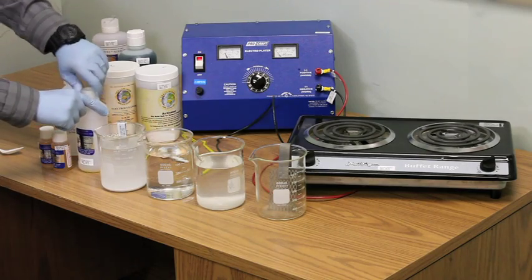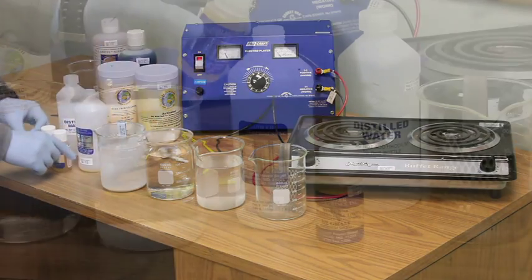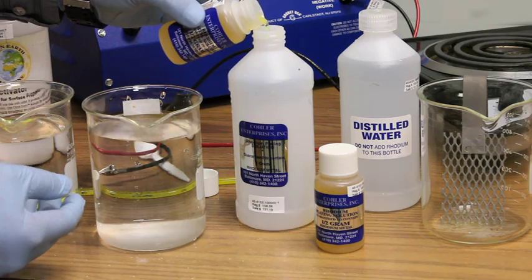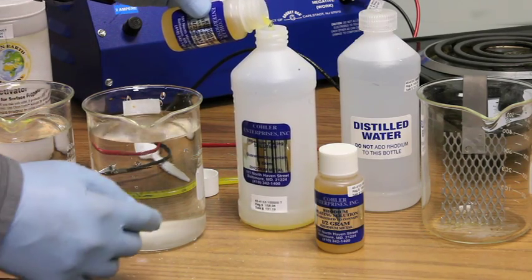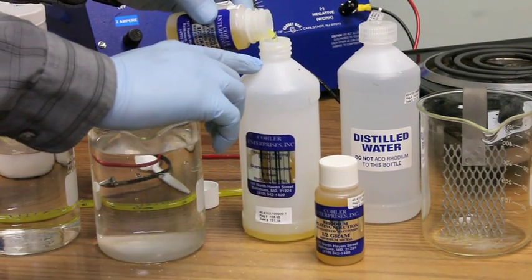Now mix the actual rhodium solution by pouring the two containers of rhodium into an empty bottle and fill the rest of the bottle with distilled water.